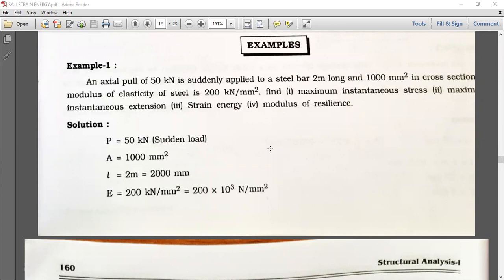The modulus of elasticity of steel, which we already studied in mechanics of solids, is 200 kilonewton per mm square. Find first maximum instantaneous stress, second maximum instantaneous extension, third strain energy, and fourth modulus of resilience. We know all these equations already from the theory portion.